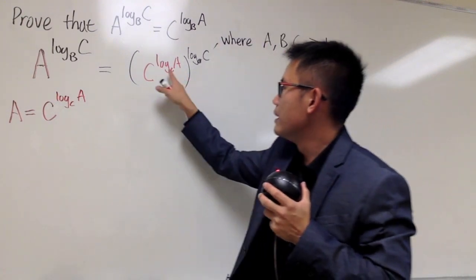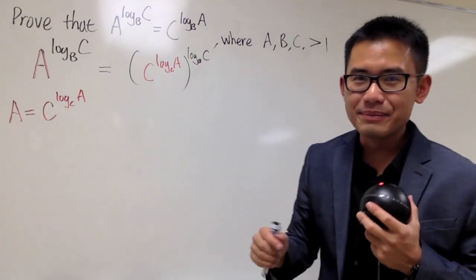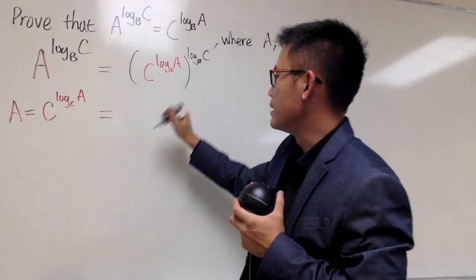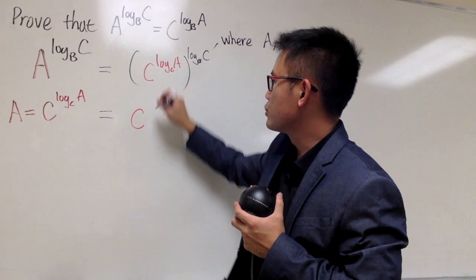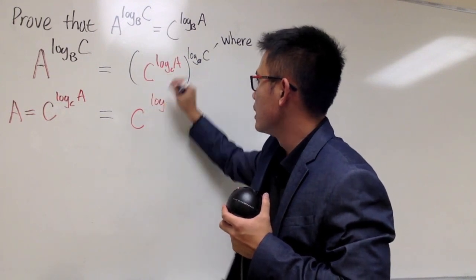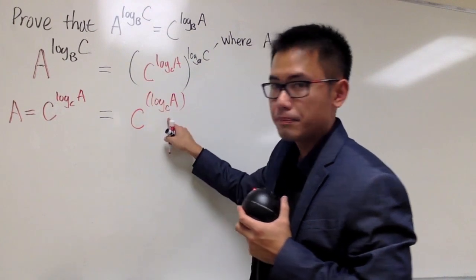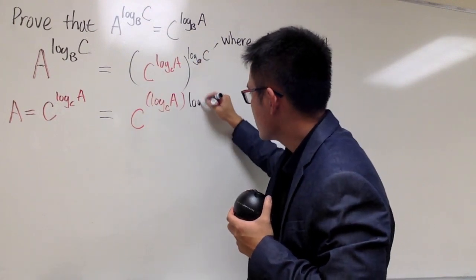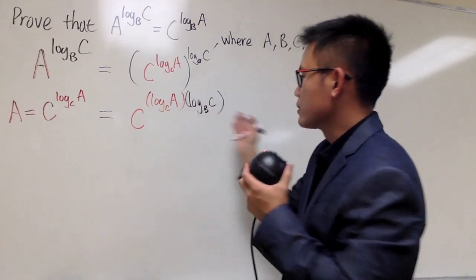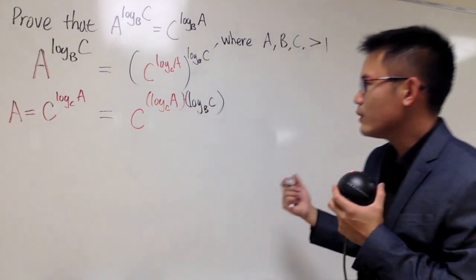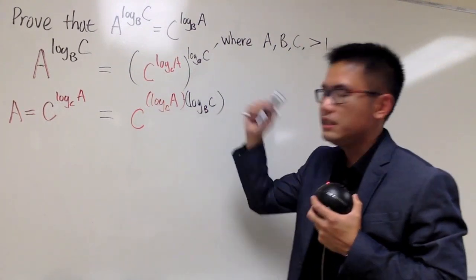And now we have a power to another power. What do we do with powers? Multiply them! So we have the following: C — in red — raised to log base C of A multiplied by log base B of C — in black. We're just multiplying the exponents.